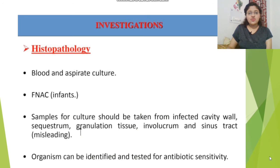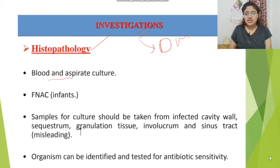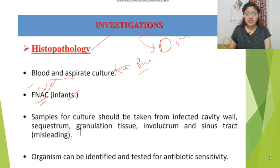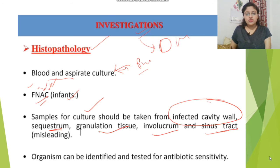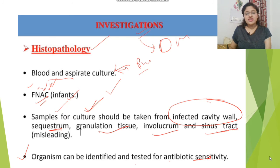For investigations to identify osteomyelitis: histopathology, blood and aspirate culture — where pus is aspirated — and FNAC (fine needle aspiration cytology), which is preferred in infants. Culture can be taken from the infected cavity wall, sequestrum (necrotic bone), granulation tissue, involucrum, or sinus tract. The organism can be identified and tested for antibiotic sensitivity, so we know which antibiotic to give the patient.